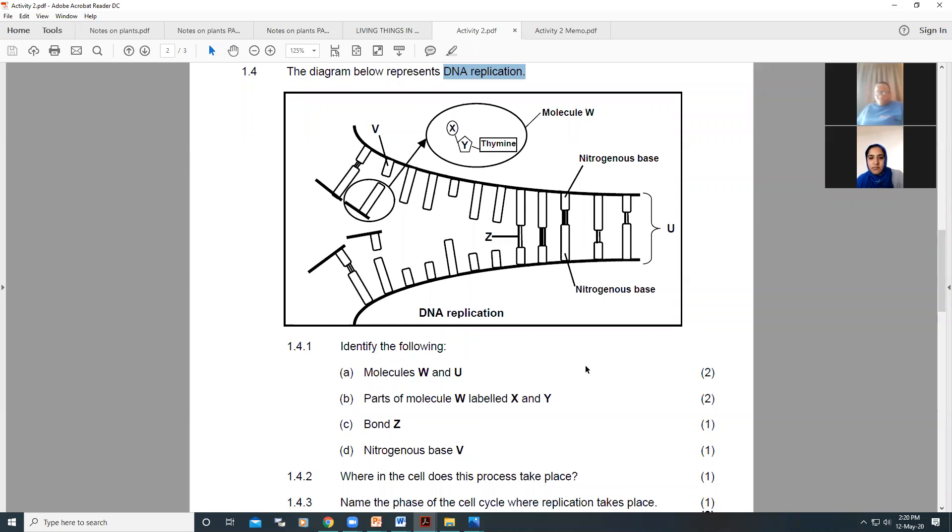So now if you come to 1.4, you'll find we've basically answered all of it. Molecule W and U. W was a nucleotide. U is a DNA molecule. Then parts of molecule W labeled X and Y. X is the phosphate. Y was the deoxyribose sugar. Bond Z is a hydrogen bond. And nitrogenous base V would have been adenine. And we get that from complementary pairing.